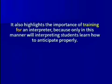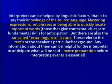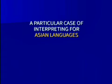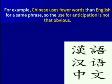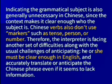The second type is based on the interpreter's knowledge, which is why it is very important to train for interpretation and learn how to anticipate properly. Students are taught how to anticipate during simultaneous interpreting, particularly for Asian languages. For example, simultaneously interpreting from Chinese is challenging because Chinese uses fewer words than English for the same phrase, making anticipation less obvious.